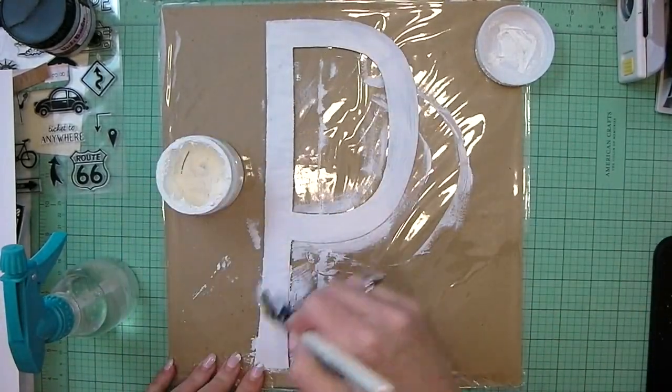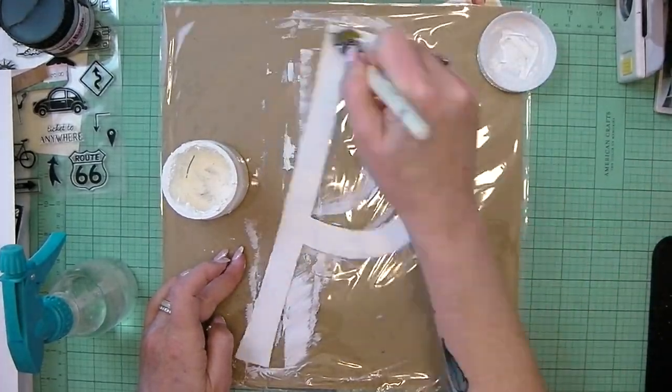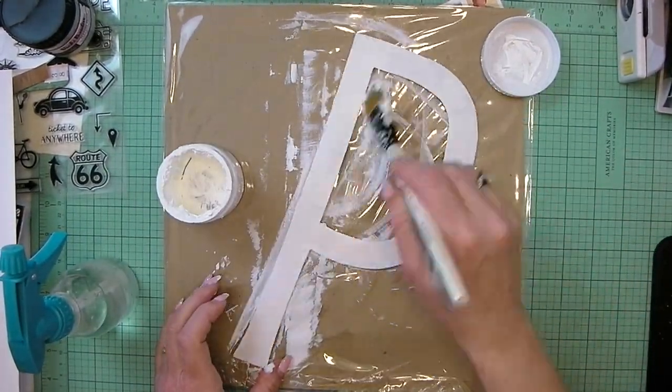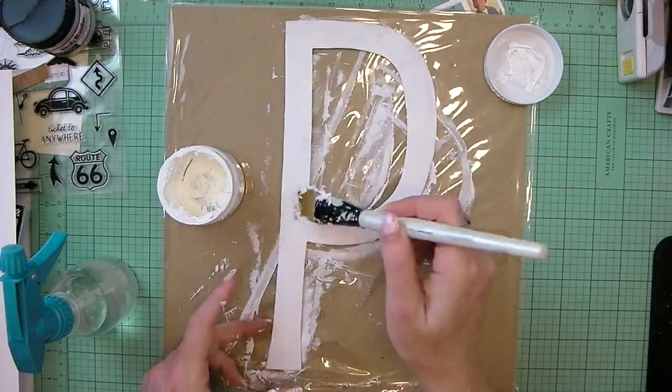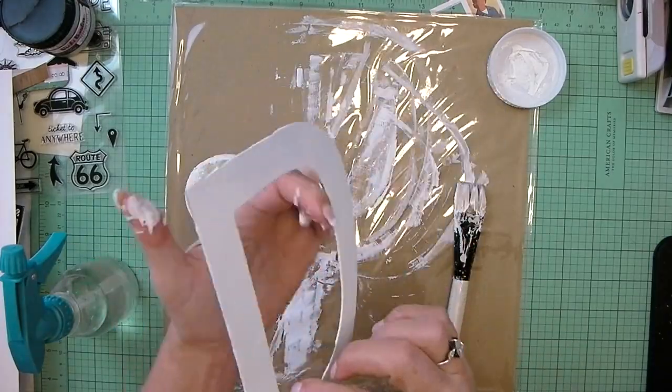I'm first layering a thick coat of the Vicki Booten white gesso onto this very large chipboard letter. It's the letter P for Peanut, my Pomeranian, and I'm making sure that I coat this really well with gesso so that the paint won't soak into the chipboard.